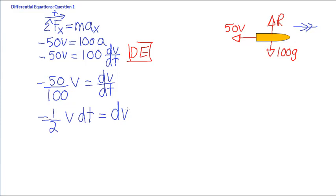Finally, divide both sides by V and in the end, we get minus a half dt is equal to 1 over V dV. Integration sign on both sides. We have now separated the variable.